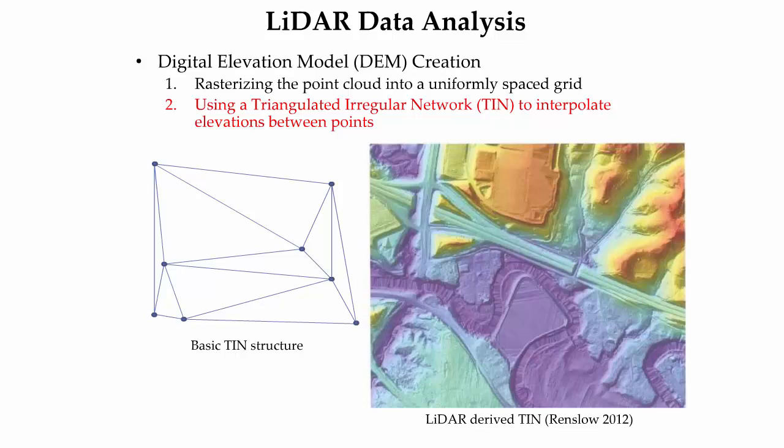A Triangulated Irregular Network, or TIN, is a data structure that utilizes the elevation from the Z value of interconnected XYZ points to form distinct triangles, as shown in the left figure. The elevation of any point within the triangle can be interpolated from the elevations of the three corner points. TINs form a continuous surface that retains the original geometry of the source data points. The image on the right is an example of a LiDAR-derived TIN colored by elevation.